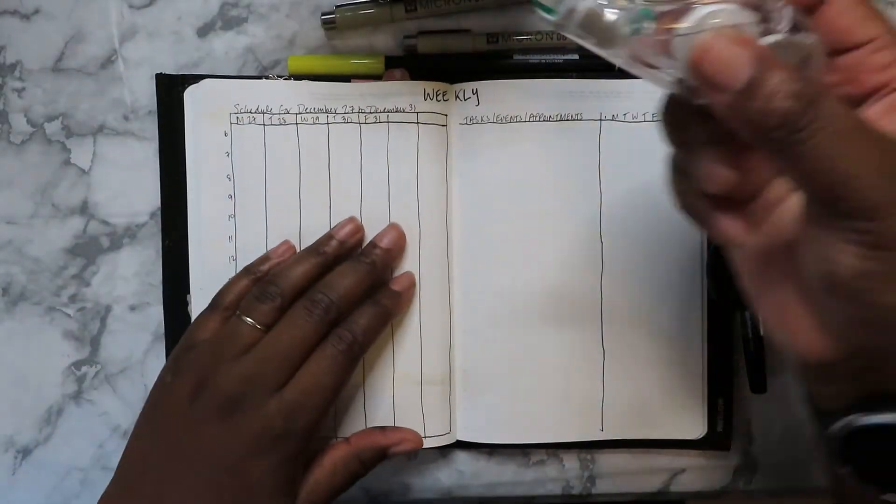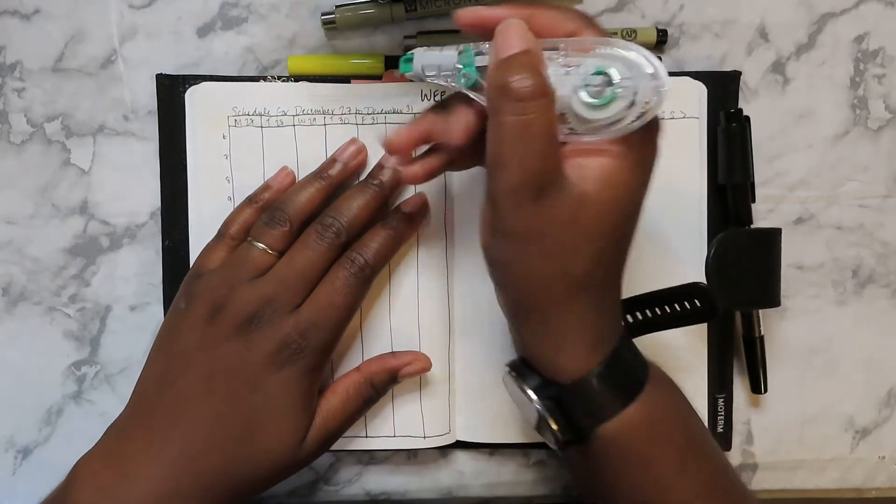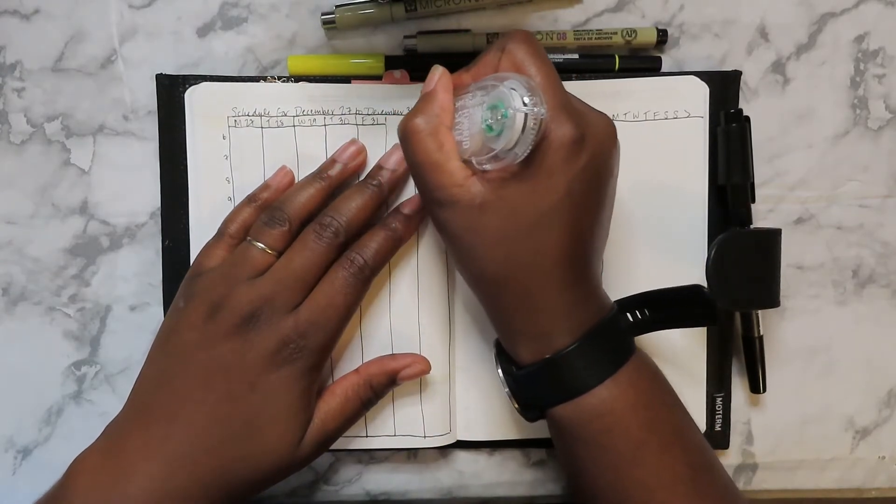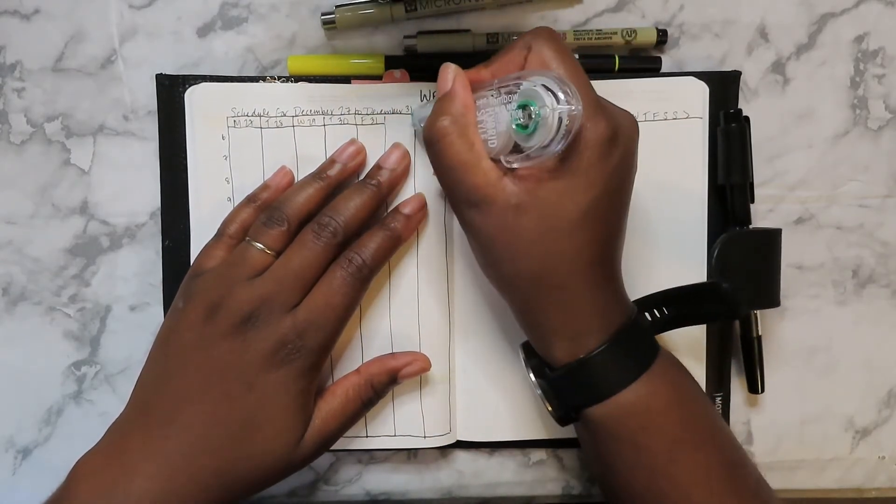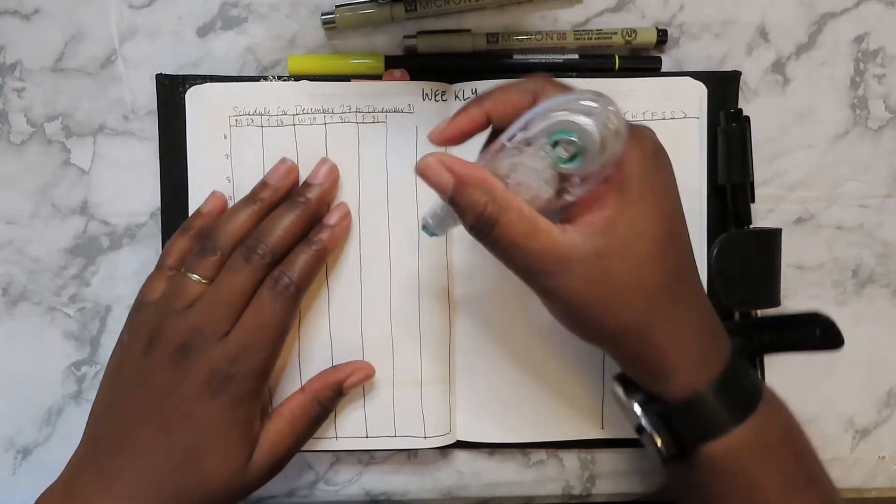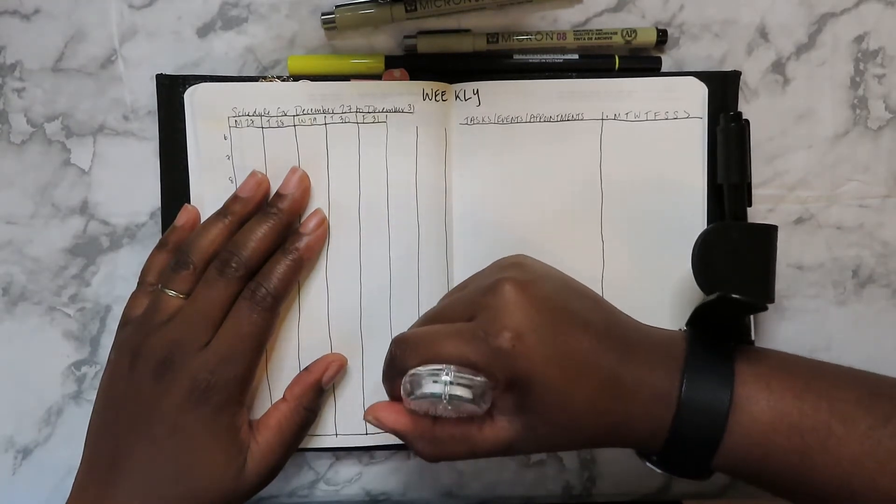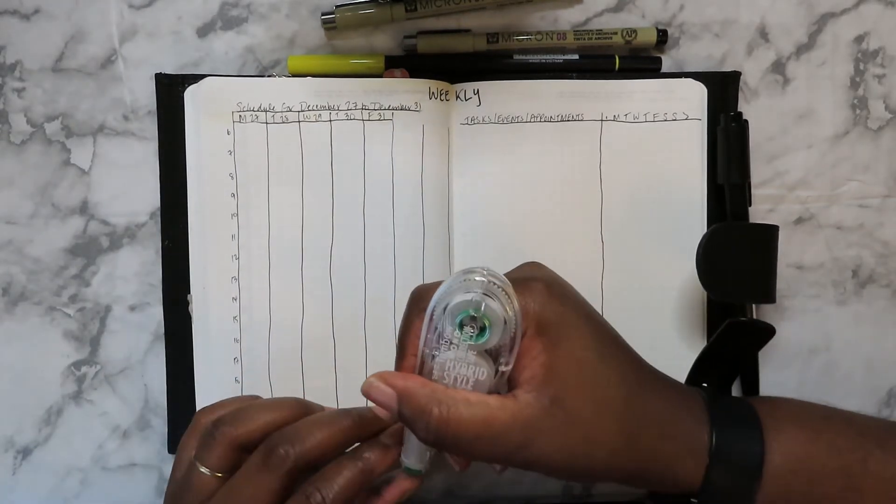So what I'm going to do is I'm going to take my trusty white out, my Tombow Mono correction tape, and correct my mistakes.